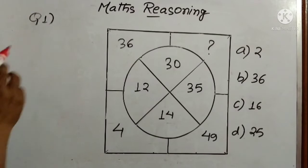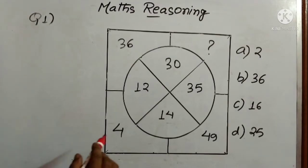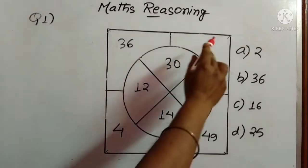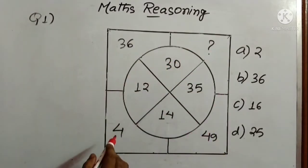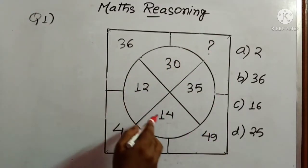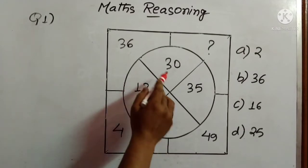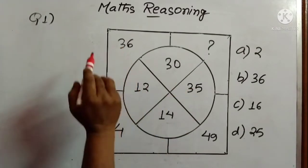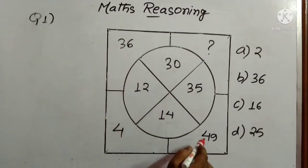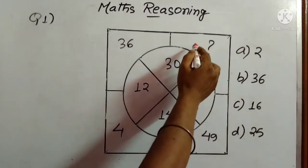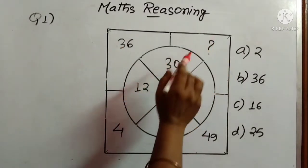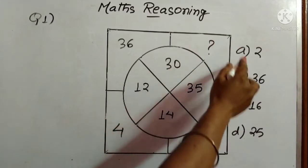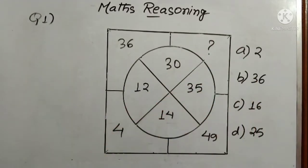Today's first question: see the figure, we have 4, 12, 14, 30, 35, 36 and 49 given. We have to find out the suitable number from the four options.